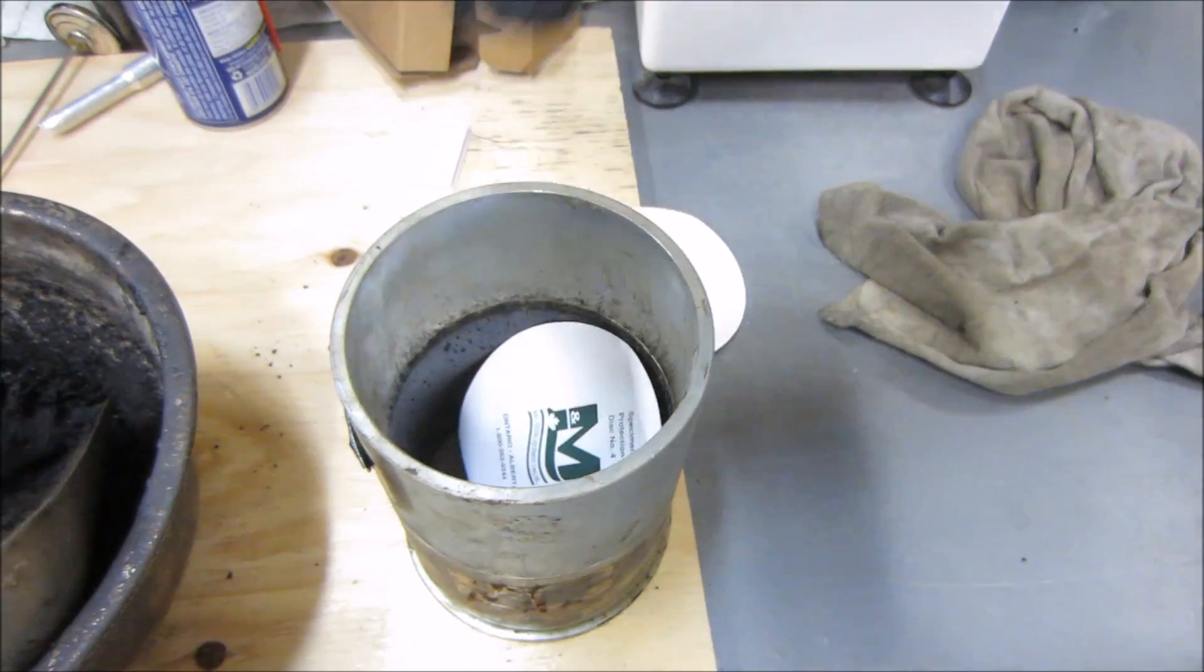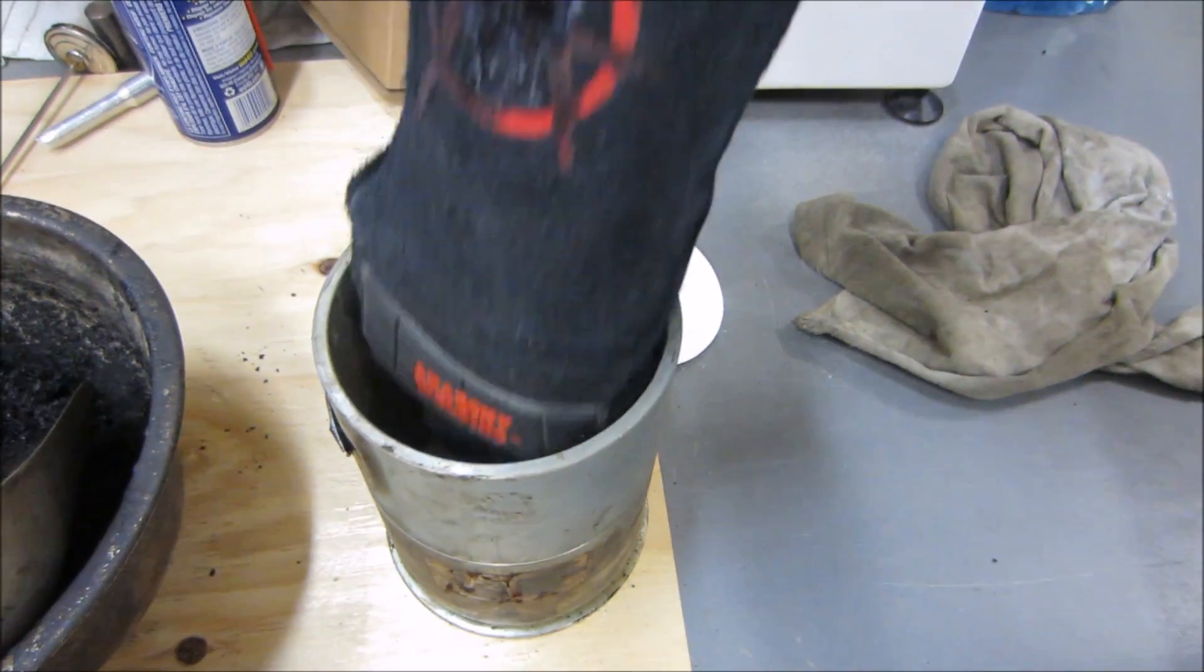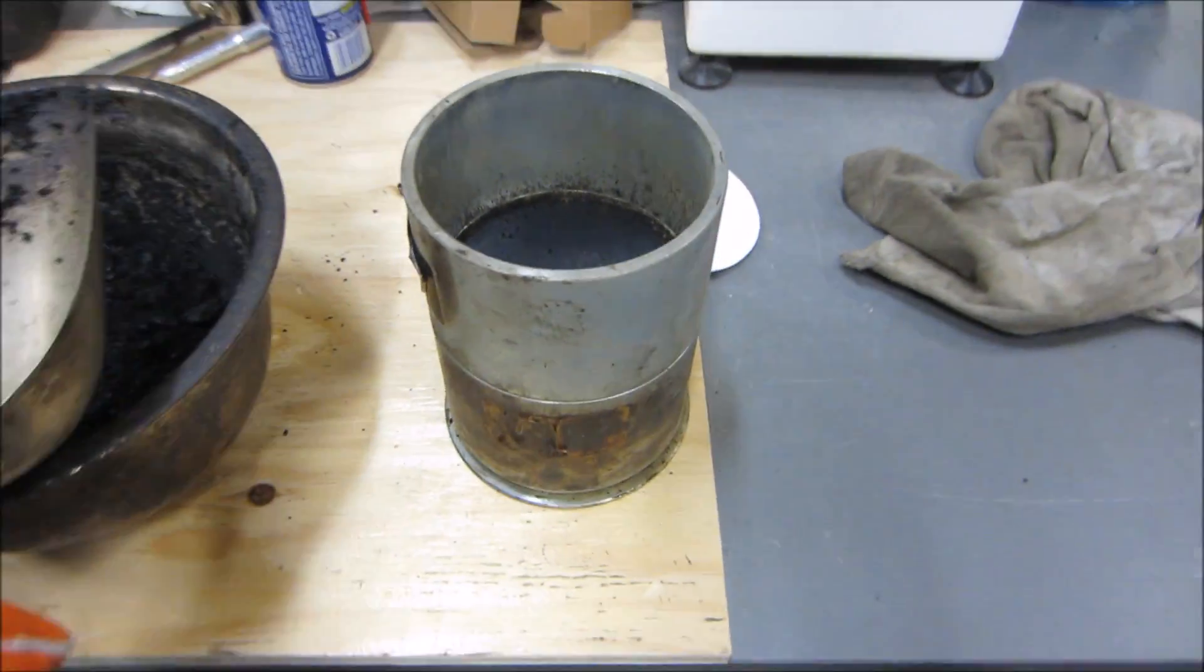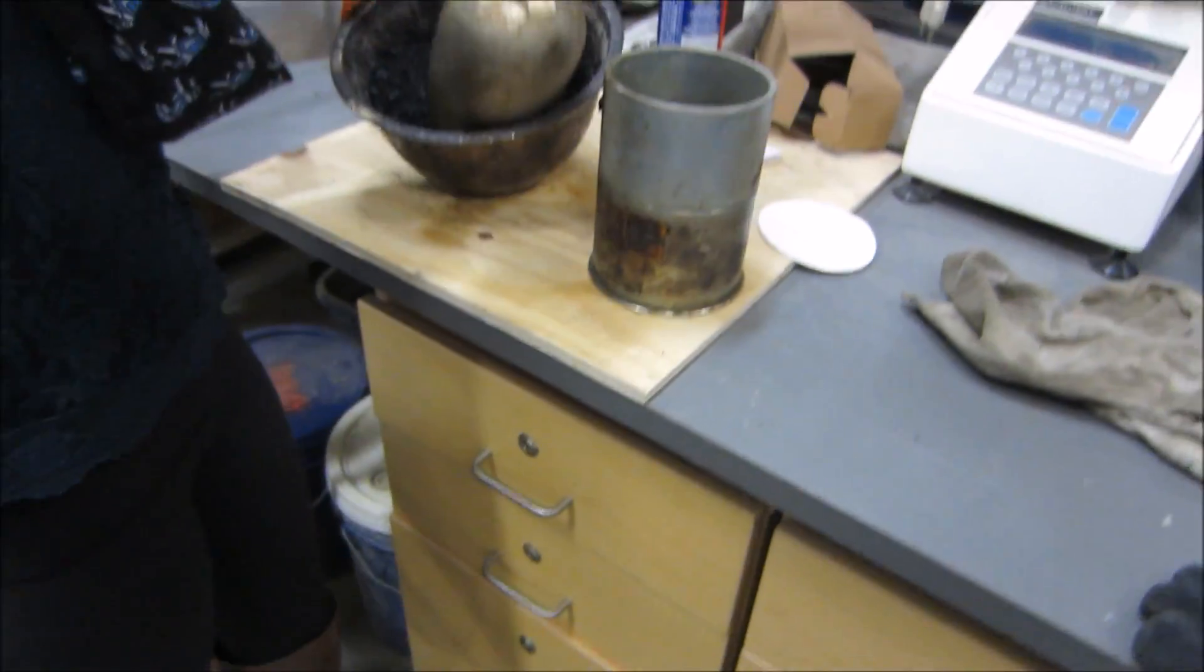Ensure that the collar is placed on the mold as the sample should exceed the height of the mold. Place a piece of release paper inside the preheated mold. Then place the entire sample into the mold.